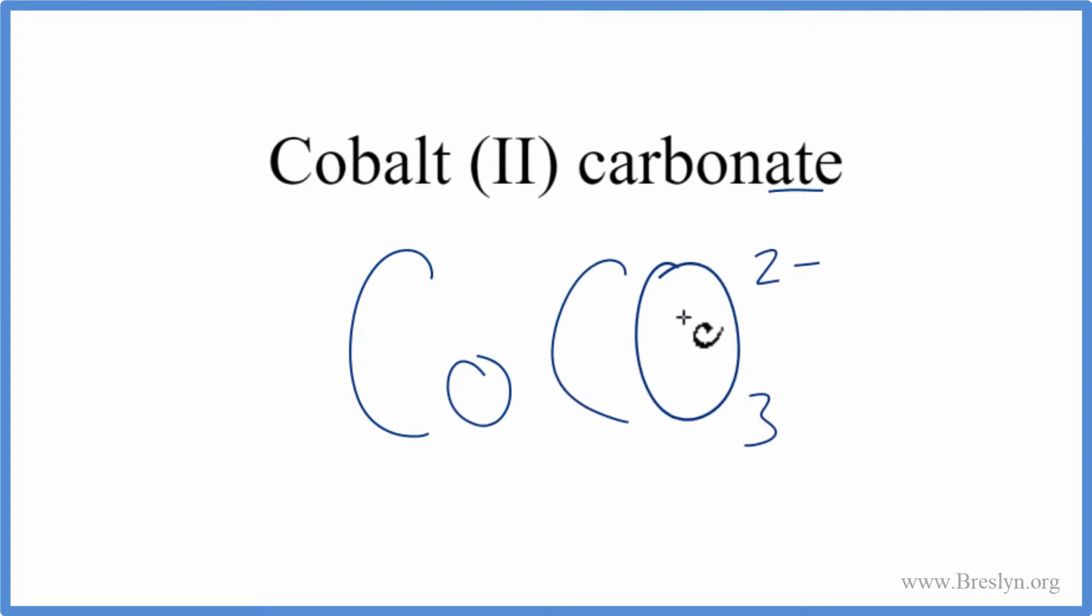Cobalt Co, that's a metal, and then CO3 2-, the carbonate ion, that's made up of a group of nonmetals. We have a metal and nonmetals, we have an ionic compound, and because of that, we need to consider the charges when we write the formula.